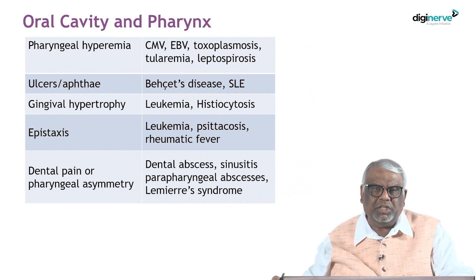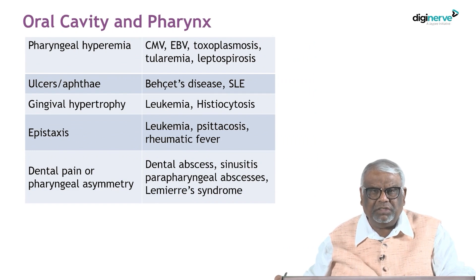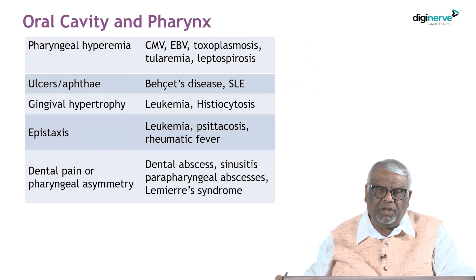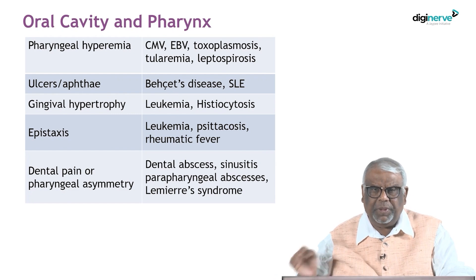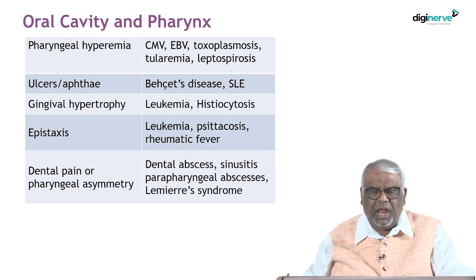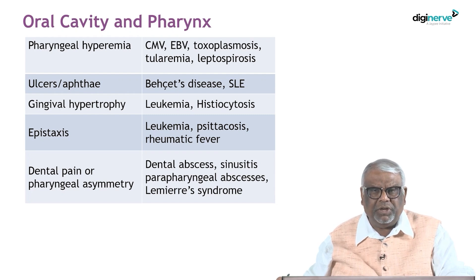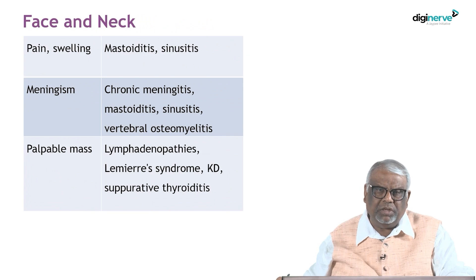Examine the oral cavity and pharynx carefully. Look for pharyngeal hyperemia, oral ulcers, hypertrophy of the gums — typically seen in leukemia and histiocytosis — and also epistaxis, dental pain, or pharyngeal asymmetry, which would point toward parapharyngeal abscess or Lemierre syndrome.